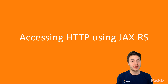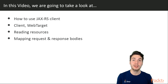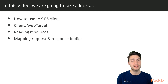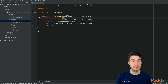This first video is about how to access HTTP using the JAX-RS client. We're going to see how we can use the client functionality with the Client and WebTarget types, how we can read resources, and how we can map request and response bodies to Java types. In our car factory, we have a CDI managed bean.